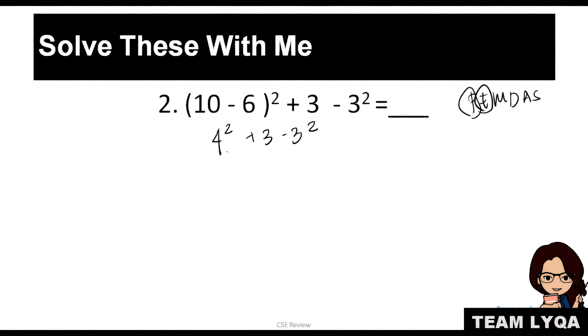Tapos, meron ka bang exponents? Yes. You have this and this. So, uunahin natin sya. You have 4 times 4, that would be 16, plus 3. Ito yung gusto kong magpay kayo ng close attention to. This is why I included this in the examples. I want to explain better kung paano nyo ito gagawin. Common mistake is people would say, ah, okay, negative 3 times negative 3 ito. Kasi daw negative 3 squared. That is actually wrong.